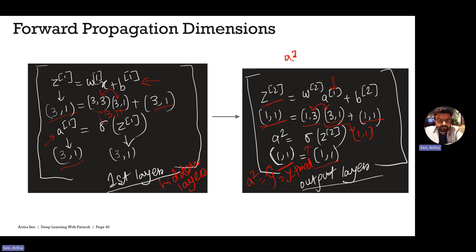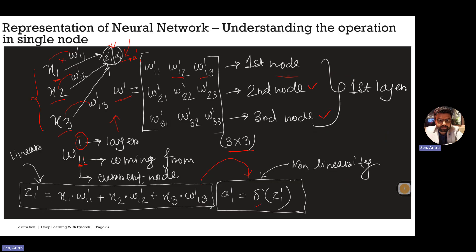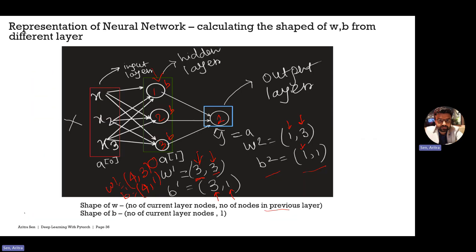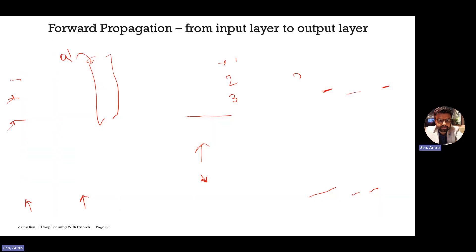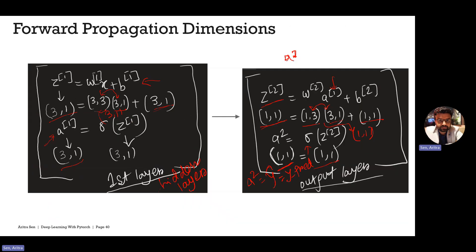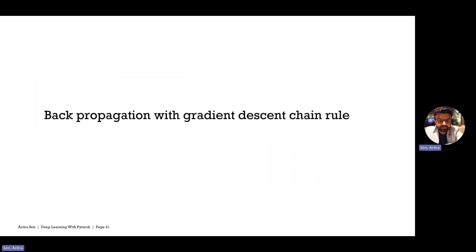I know this is a bit confusing with all these operations. If you are not understanding it, I would request you to go through from the start of this video, and slowly write it down on pen and paper and understand the shape of each node's output — then it would be much easier to understand. That's all I have for this video. In the next video, we will go through how back propagation works with the help of gradient descent along with the chain rule. Thanks for watching.